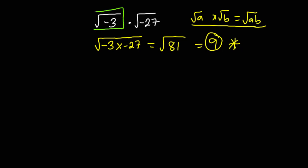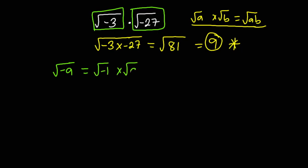The square root of a negative number, say √(-a), is the same as √(-1) × √a. Now √(-1) is a complex root represented by i, so √(-a) = i√a. We are going to apply this principle to expand √(-3) and √(-27).